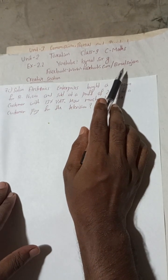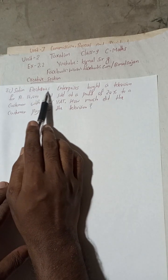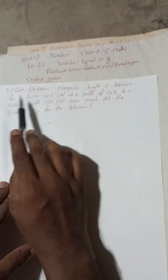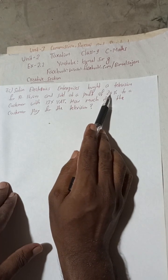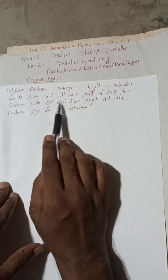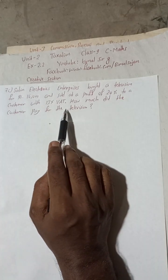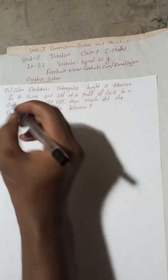So let's begin the solution. An electronics enterprise bought a television for Rs 16,000 and sold at a profit of 20% to a customer with 13% VAT. How much did the customer pay for the television?